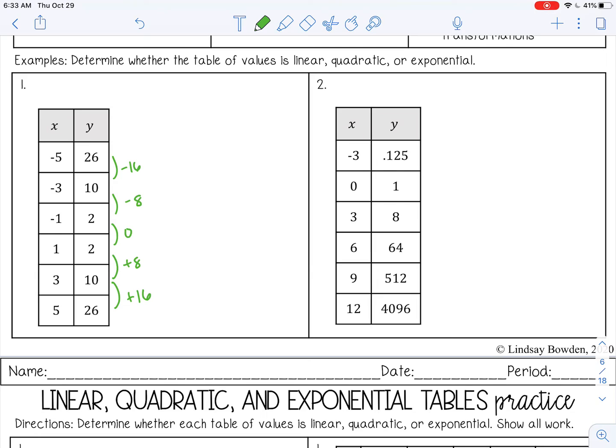So let's see if it's quadratic. From negative 16 to negative 8, you need to add 8. From negative 8 to get up to 0, you need to add 8. From 0 to get up to 8, you need to add 8. And then 8 to 16, add 8. So this is quadratic because my second difference is the same.